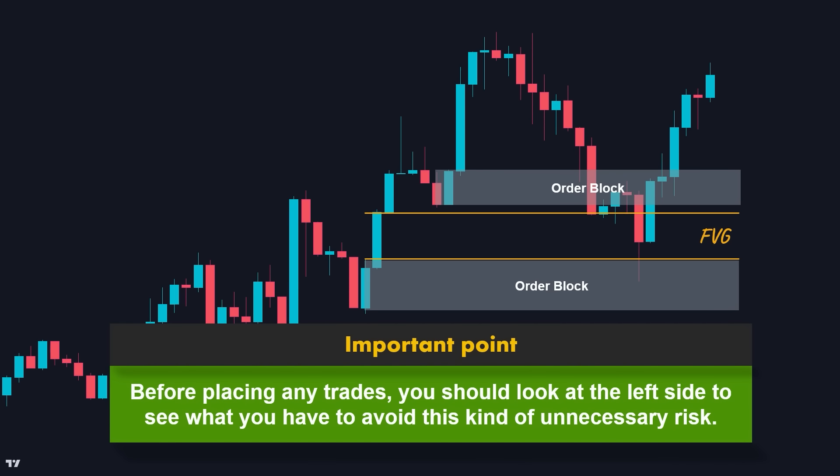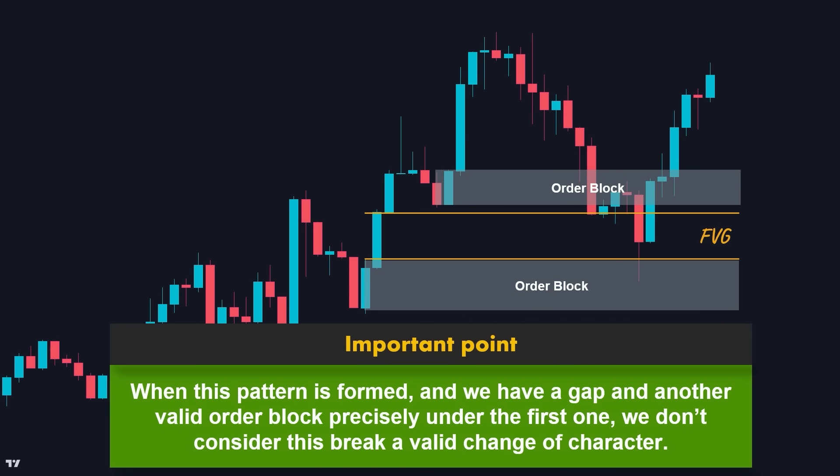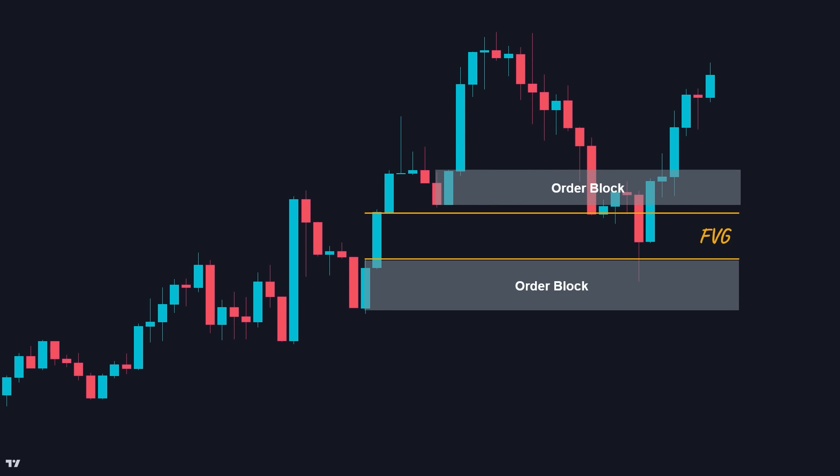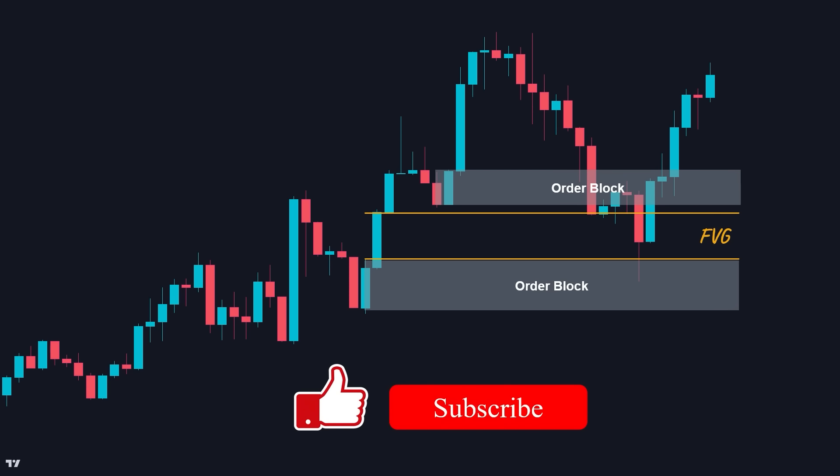So here are two points. First, before placing any trades, you should look at the left side to see what you have, to avoid this kind of unnecessary risk. Second, when this pattern is formed and we have a gap and another valid order block precisely under the first one, we don't consider this break a valid change of character, since there is a high chance for this move to be just a liquidity grab and does not necessarily mean a reversal is coming. I hope this video has some value for you. Please give this video a thumbs up and subscribe if you have not already. See you in the next episode.